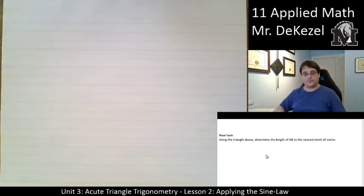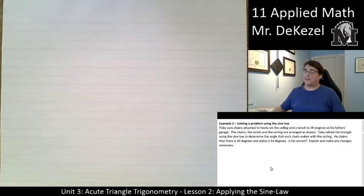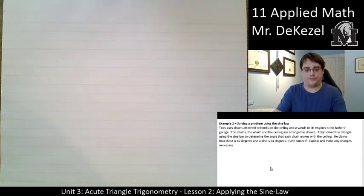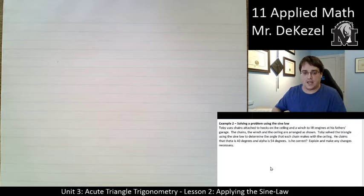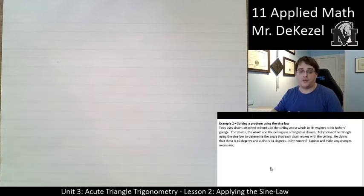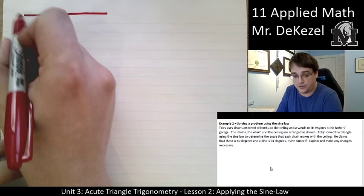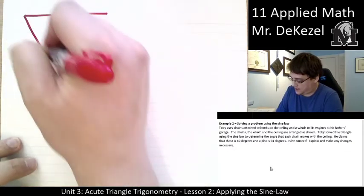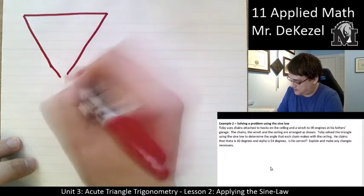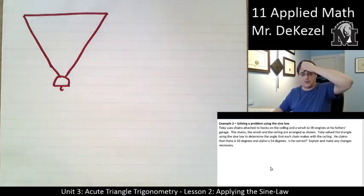Let's go to the next problem. So Toby uses chains attached to hooks in the ceiling and a winch to lift engines at his father's garage. The chains, the winch, and the ceiling are arranged as shown. I'll show you right here. So this is the roof. We have two hooks here. It says that we have an engine suspended like this. This is our engine. That is our engine.